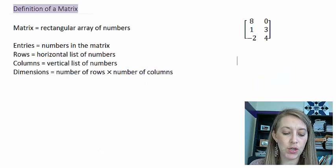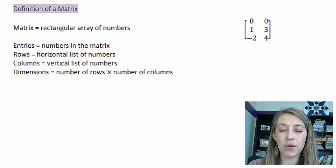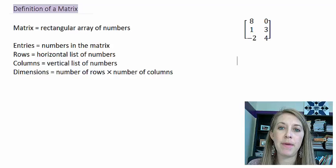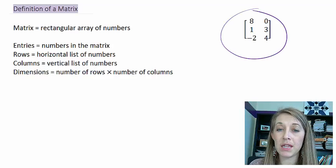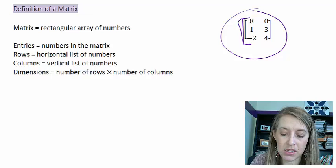Well, the definition of a matrix is a rectangular array of numbers, which might or might not help you at all. If you are familiar with computer science, then you probably know what an array is. An array is just kind of a row or a stack of numbers, and a matrix is when you put all of these rows or stacks together. You can see this image over here on the right — this is basically a matrix. It's just a grid of numbers, and to identify the matrix, we have the brackets on the outside.